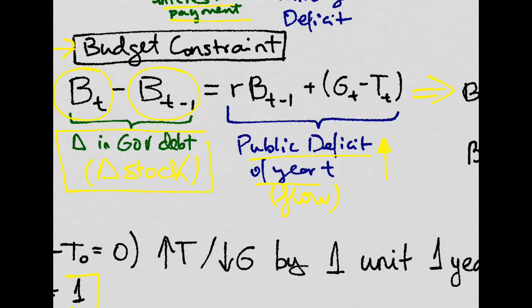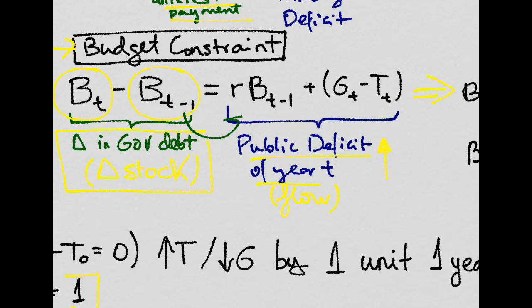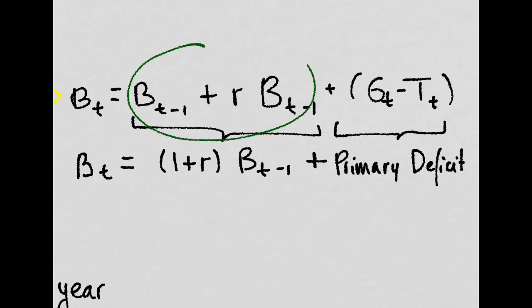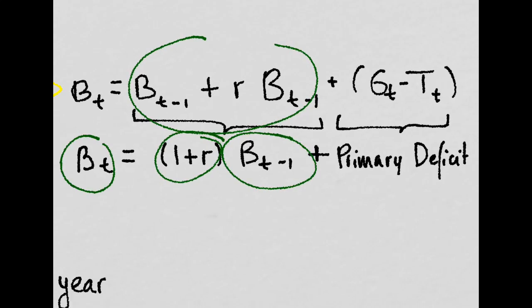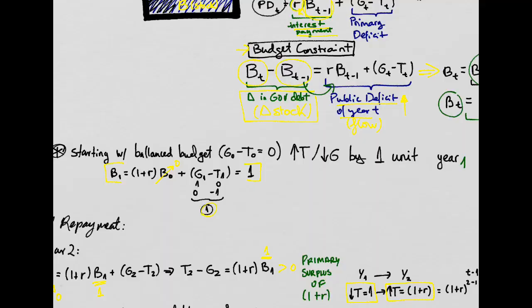We can rearrange and take this over there. And we get this, which is just this, times the previous year stock of bonds. So the level of debt at year T is equal to all this.